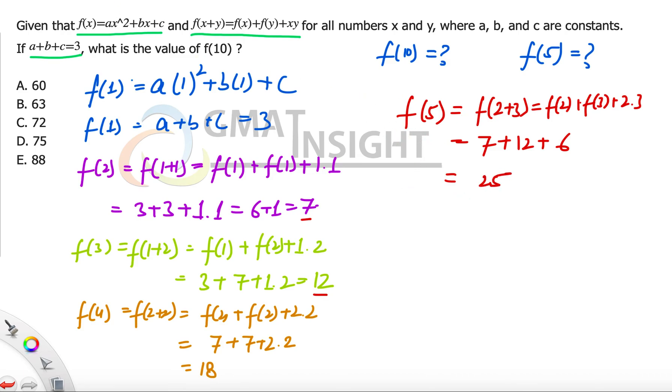Now the moment we have f(5), now we have a very clear way forward, which is to find out the value of f(10). Now we can simply write f(5+5), which can further be written as f(5) + f(5) + 5×5. f(5) is 25, so 25 + 25 + 5×5 is also 25, total becomes 75. And that should be our answer, which is option D.